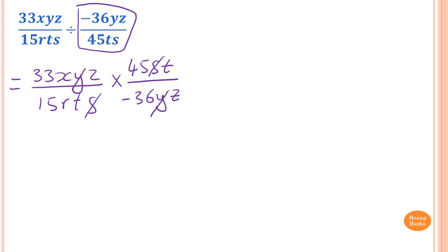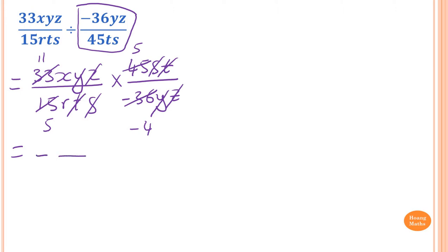Then y cancels with y, z with z, and t as well. For the numerals: 33 and 15 divide by 3 giving 11 and 5. Then 45 and 36 divide by 9 giving 5 and 4. There is only one negative so the answer is negative. The two fives cancel out.